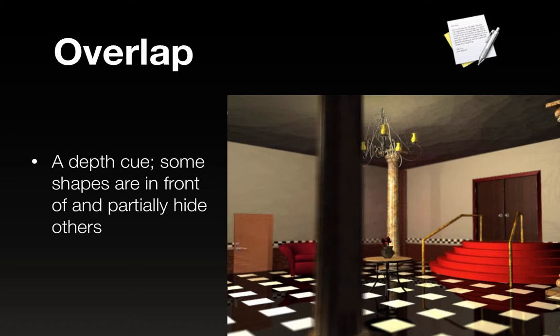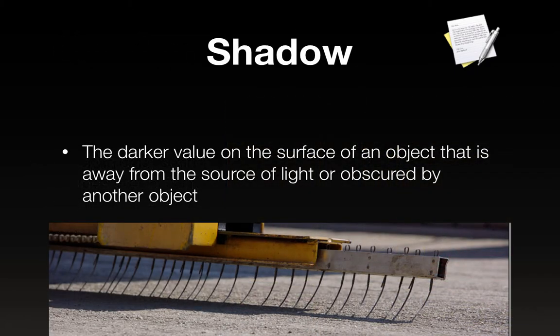Overlap is a depth cue — some shapes are in front of and partially hide other shapes, so if we see something overlapping other shapes, we interpret it as being in front. A shadow is the darker value on the surface of an object that is away from the light source or obscured by another object. When light hits an object it casts a shadow, and that really helps with depth perception. If you do a cast shadow in your assignment it will anchor your objects to the ground and read better.